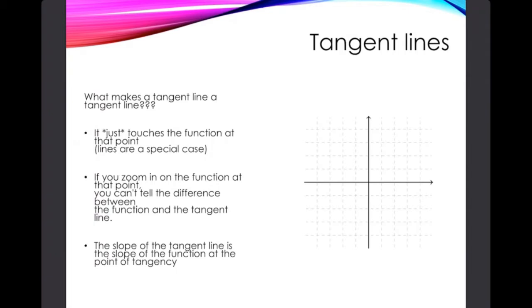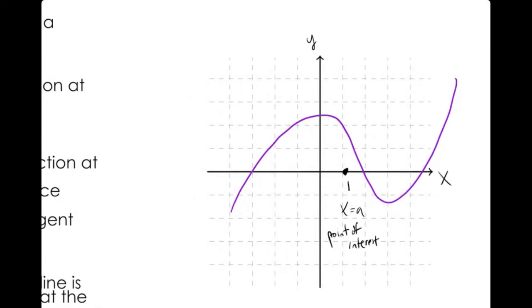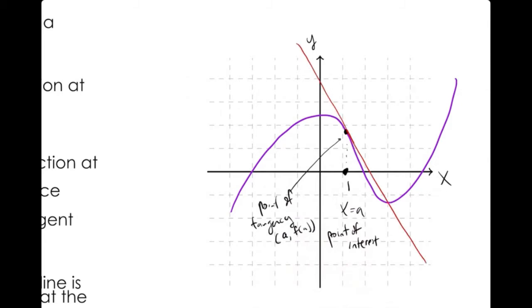First, it just touches the function at the point of tangency — lines are a special case because the tangent line to a line is the line again, which isn't very interesting. In terms of it just touching at a point: I'm going to mark this point here at x equals a, and up here this is going to be the point of tangency. The coordinates of it are (a, f(a)) because a is the x-value and f(a) is the height on the curve. And I'm going to draw the tangent line — that's the best I can do by hand.